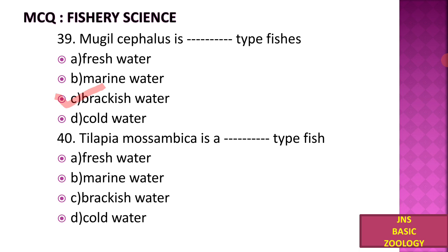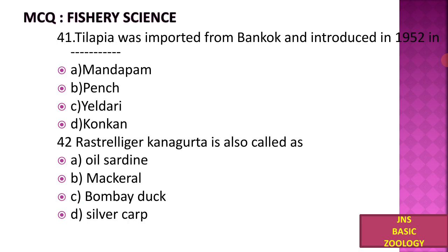Tilapia mossambica is what type of fish? A) Freshwater, B) Marine water, C) Brackish water, D) Cold water. Tilapia is also a well-known brackish water fish.